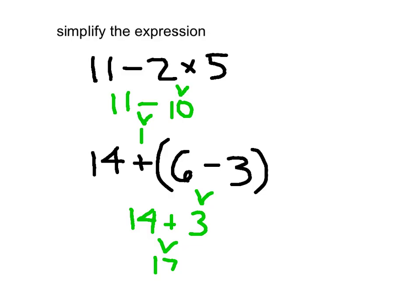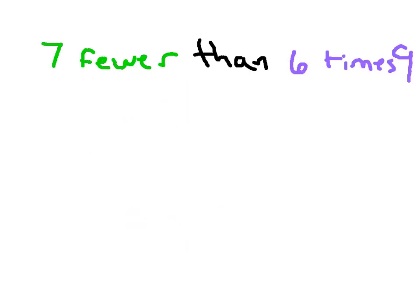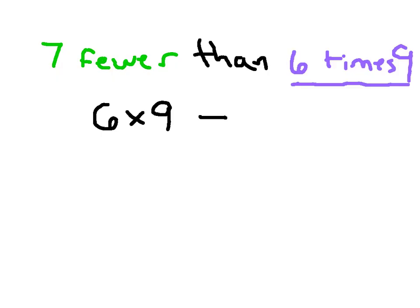Our next step is to show you how we translate expressions into words and vice versa. Here are some words describing an expression: 7 fewer than 6 times 9. We're going to start with 6 times 9, so we write 6 times 9. It says 7 fewer than 6 times 9 — 'fewer' means subtraction. So we subtract 7 from that, putting it in parentheses to make it clear: 7 fewer means minus 7, than 6 times 9. That gives us (6 × 9) − 7.